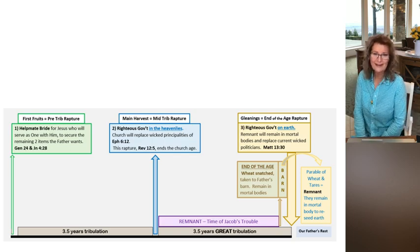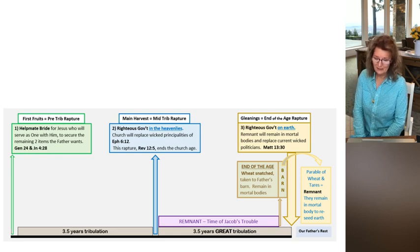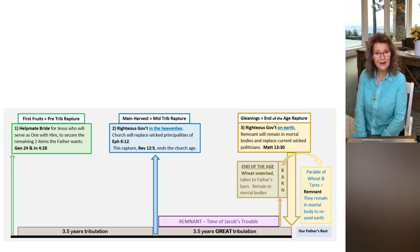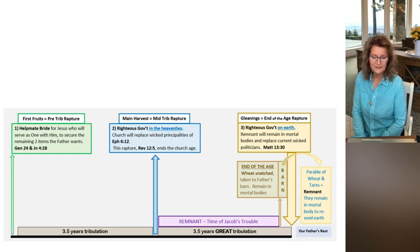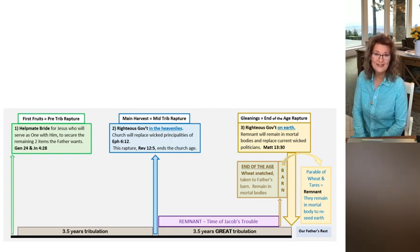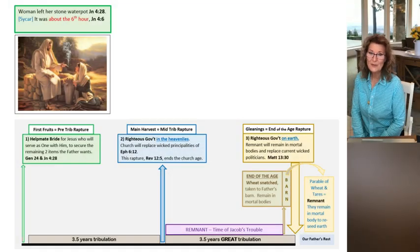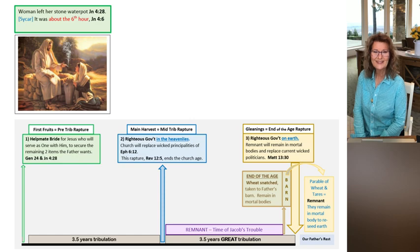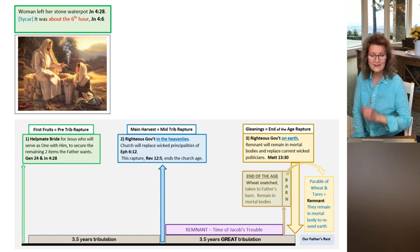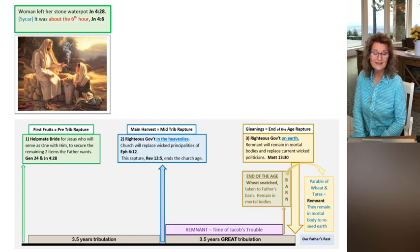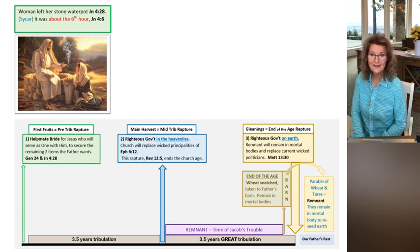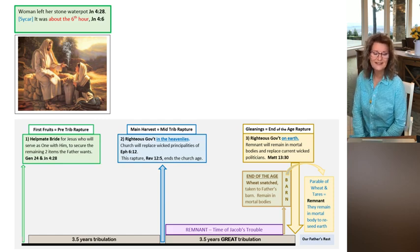The pre-trib rapture is of the helpmate bride for Jesus, who will serve as one with Him. That's the first fruits rapture represented through the woman who left her stone water pot—the woman at the well in John 4. In verse 28, she leaves her water pot, and that happened in Sychar. The Scriptures tell us it was about the sixth hour.